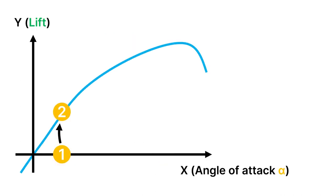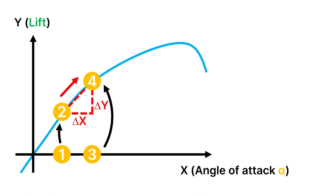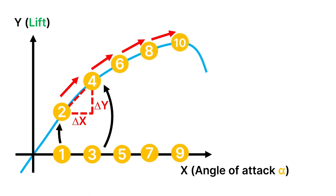To find the maximum lift value, we can start by picking a random value for the angle of attack on the x-axis and calculate the corresponding lift value on the y-axis. We can then pick a second point close to it and do the same thing. With these two data points known, we can calculate the local gradient, which indicates the direction in which we need to march to improve the objective function — lift in this case. If you take enough of these steps, you will actually end up at the peak.